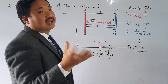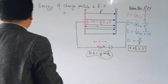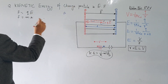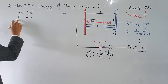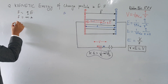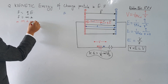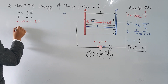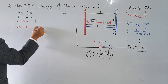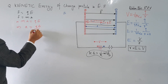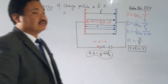Let us compare these two equations. This is also force, and this is also force. So MA should be equal to QE. This gives us acceleration A equal to QE divided by M — this is equation 1. So I got the acceleration.